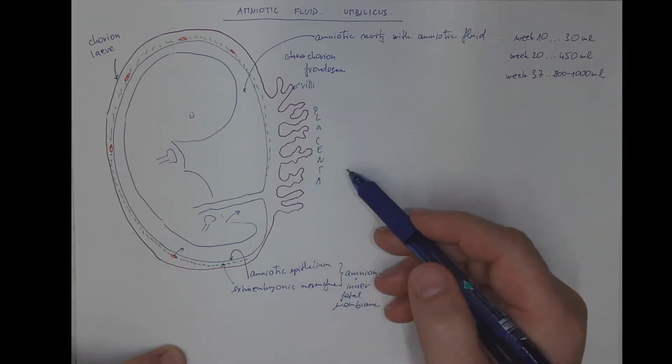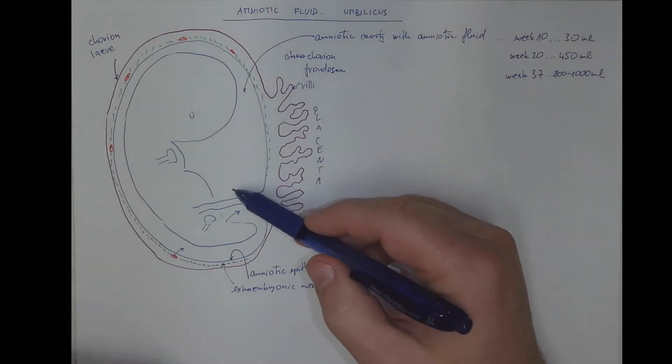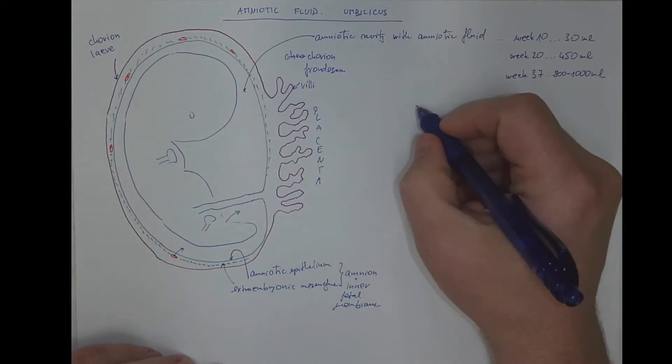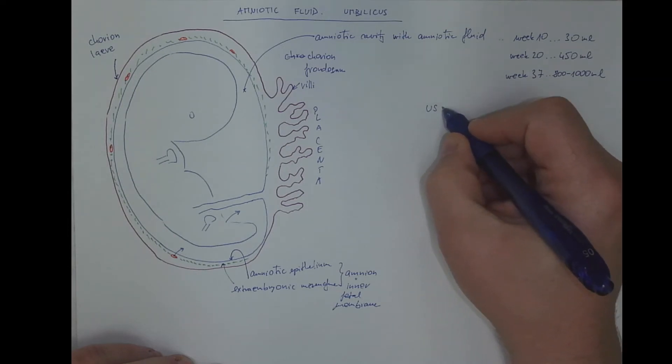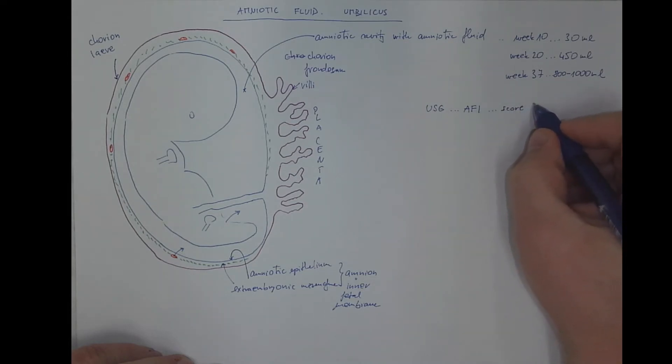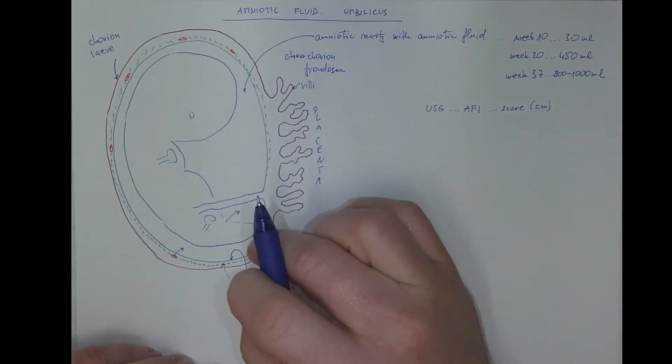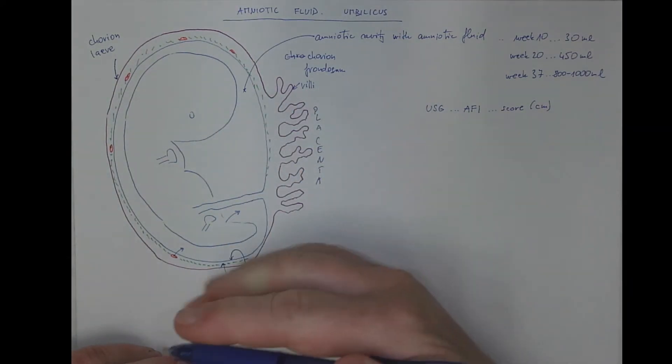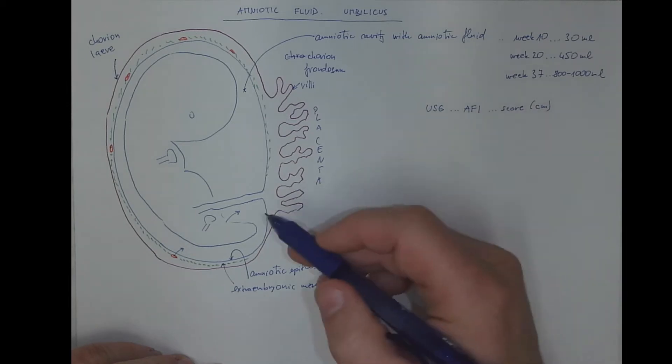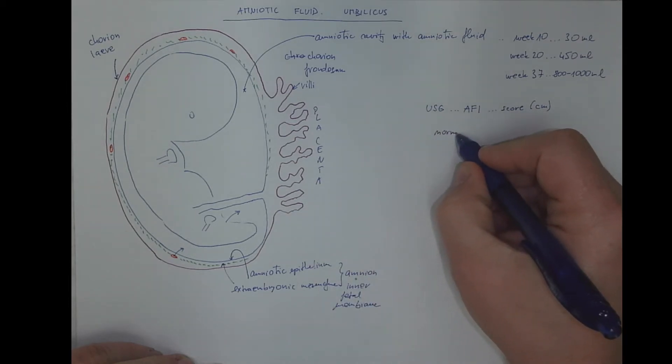The volume of the amniotic fluid needs to be proportional to the body size and to the dating, to the age of the pregnancy. This is measured using ultrasonography. And the quantity of the amniotic fluid is expressed as the amniotic fluid index, which is a score in centimeters. And it's like the length of each pocket, each accumulation of amniotic fluid counted over all quadrants examined using the ultrasound. The normal or proportional volume of amniotic fluid proportional to the age of the pregnancy is called the normohydramnios.